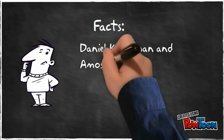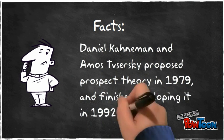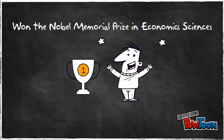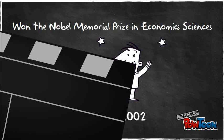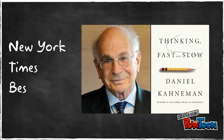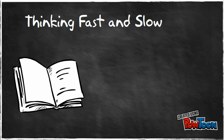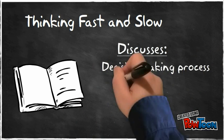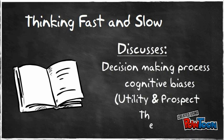Prospect Theory was proposed by Daniel Kahneman and Amos Tversky in 1979 and developed until 1992. Kahneman won the Nobel Memorial Prize in Economic Sciences in 2002 for Prospect Theory, changing modern economic theory forever. Kahneman wrote Thinking Fast and Slow, which was recognized by the New York Times in 2011 as a bestseller. His book discusses decision-making processes as well as several cognitive biases, including Utility Theory and Prospect Theory.